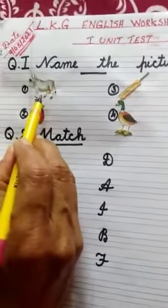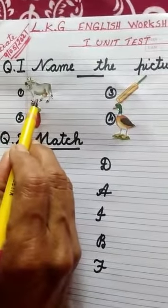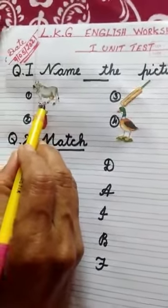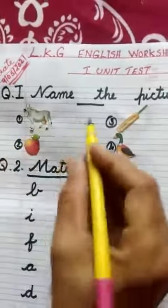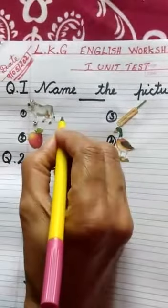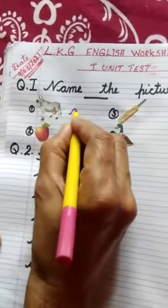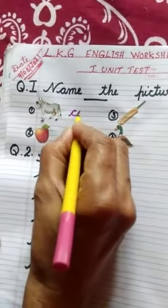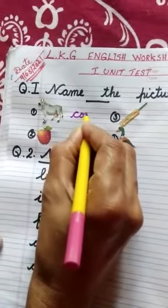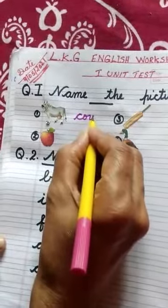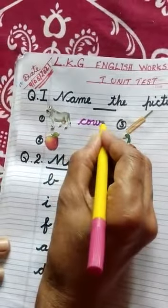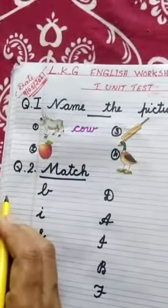Then first picture — tell me children, which picture is this? Yes, cow. Spelling of cow: C-O-W. Cow.